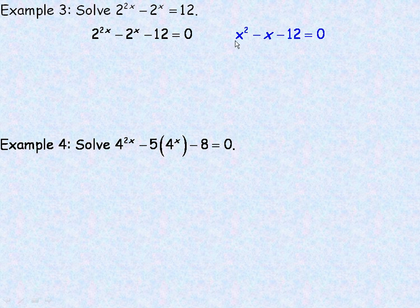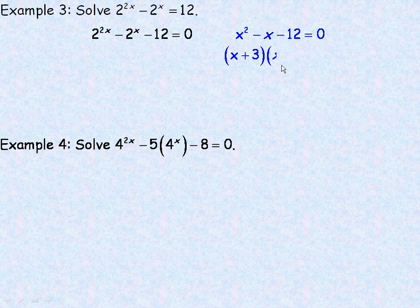In order to factor x squared minus x minus 12, you look for two numbers that add to negative 1 — because there's a coefficient of negative 1 in front of x — and that multiply to negative 12. The numbers that do that are 3 and negative 4. So that's how it factors, and if you expand it out you'll get x squared minus x minus 12.